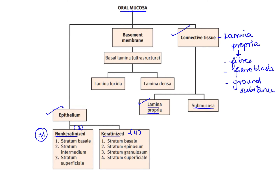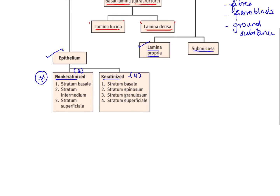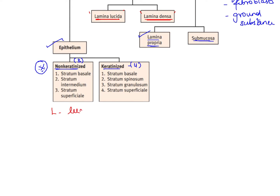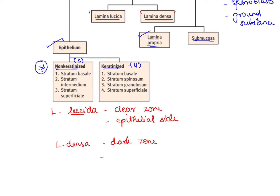Lamina propria forms the connective tissue, and between the epithelium and connective tissue is the basement membrane, which separates them. Ultrastructurally it is known as the basal lamina, made up of two layers: lamina lucida and lamina densa. Lamina lucida is lucid and therefore appears as a clear zone, whereas lamina densa is dense and appears as a dark zone. Lamina lucida is present towards the epithelial side, whereas lamina densa is present towards the connective tissue side.